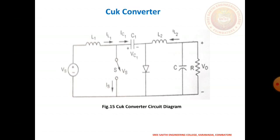Principle of operation: when the switch is in OFF condition, the diode turns ON and the capacitor charges. Current I2 flows through the load and the diode. When the switch turns ON, the diode becomes reverse biased due to the capacitor voltage. The energy stored in the capacitor is dumped into the load through current I2.